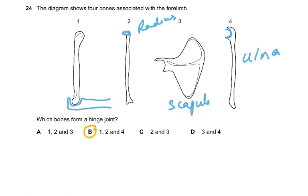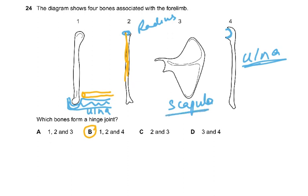Which bones form a hinge joint? Bones one, two, and four: the humerus, the ulna, and the radius — the radius fits in here. The scapula doesn't form the hinge joint; it makes the shoulder joint instead.